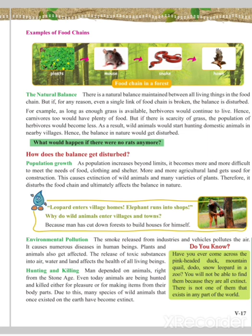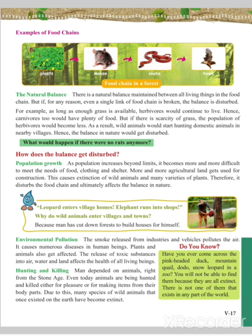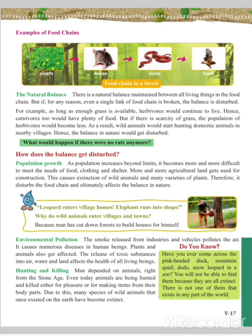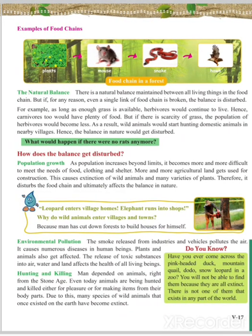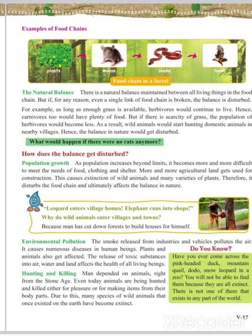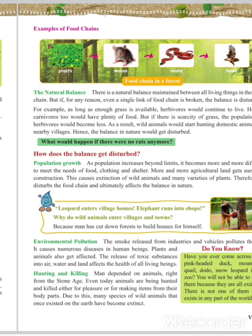How does the balance get disturbed? The causes include population growth, environmental pollution, hunting and killing of animals, and excess use of insecticides and pesticides. As population increases beyond a limit, it becomes difficult to meet daily needs, so forests are cut down to grow more crops and build shelters. By using vehicles and building industries, pollution increases, causing toxic substances to enter air, water, and land, affecting the health of living beings.